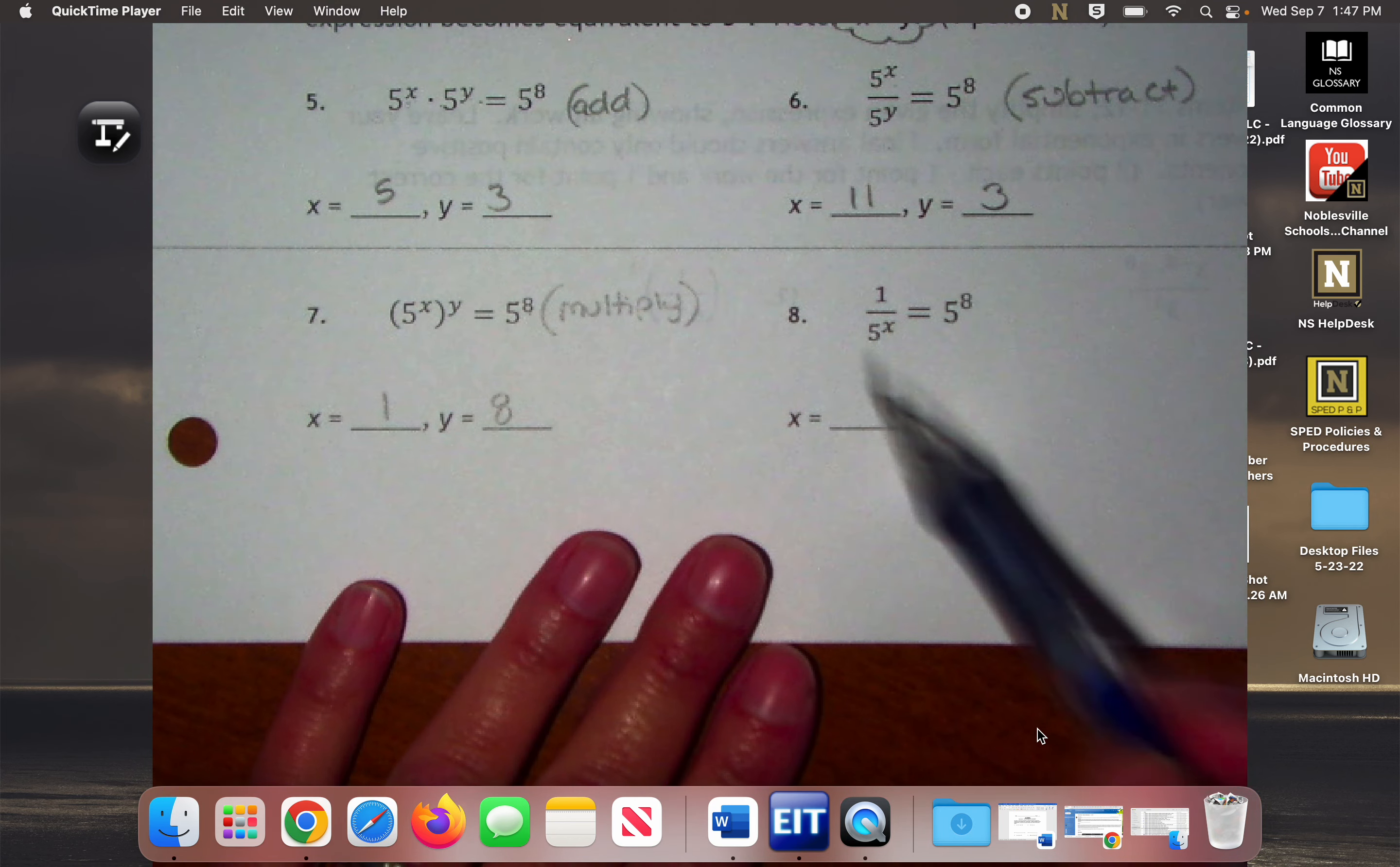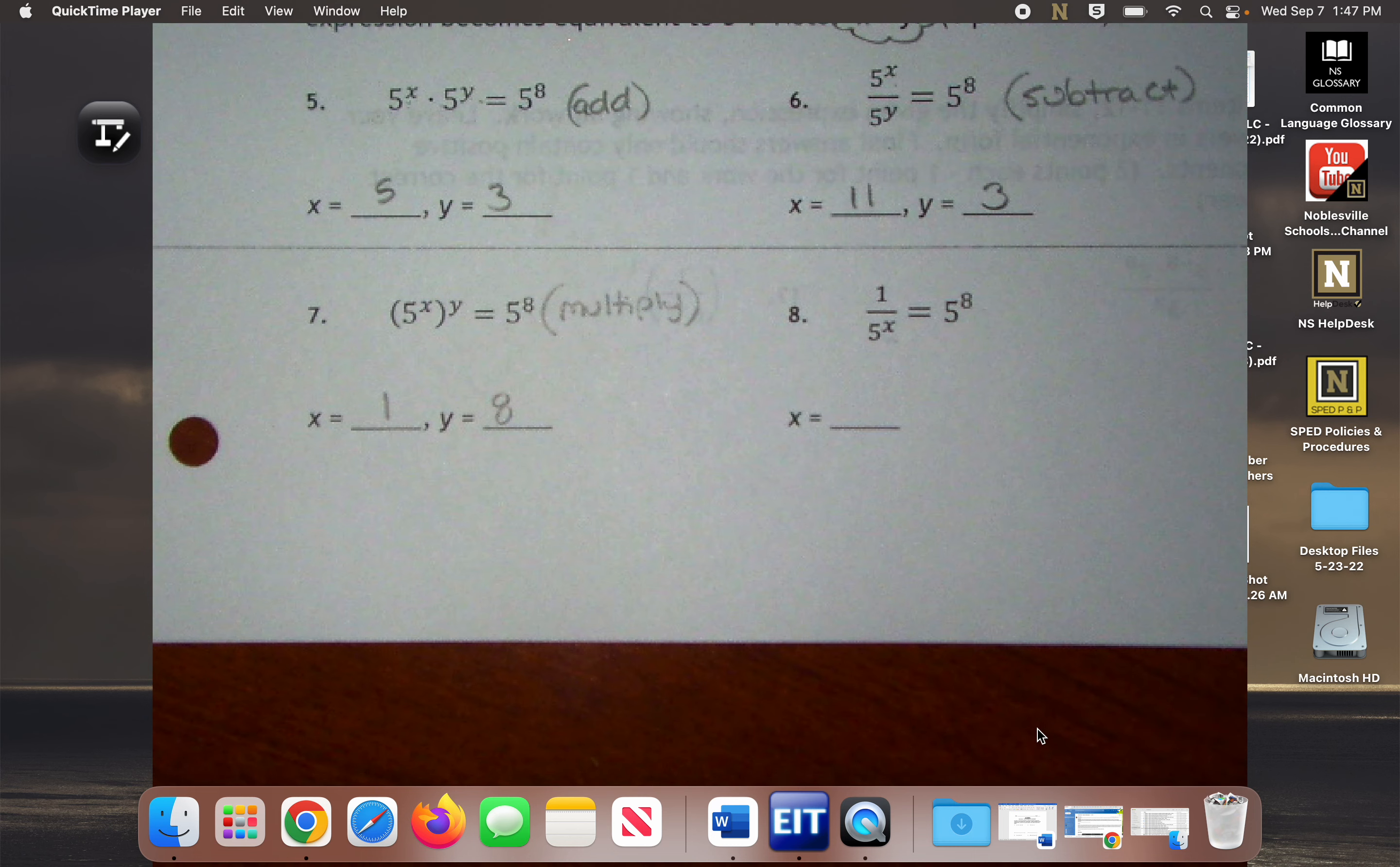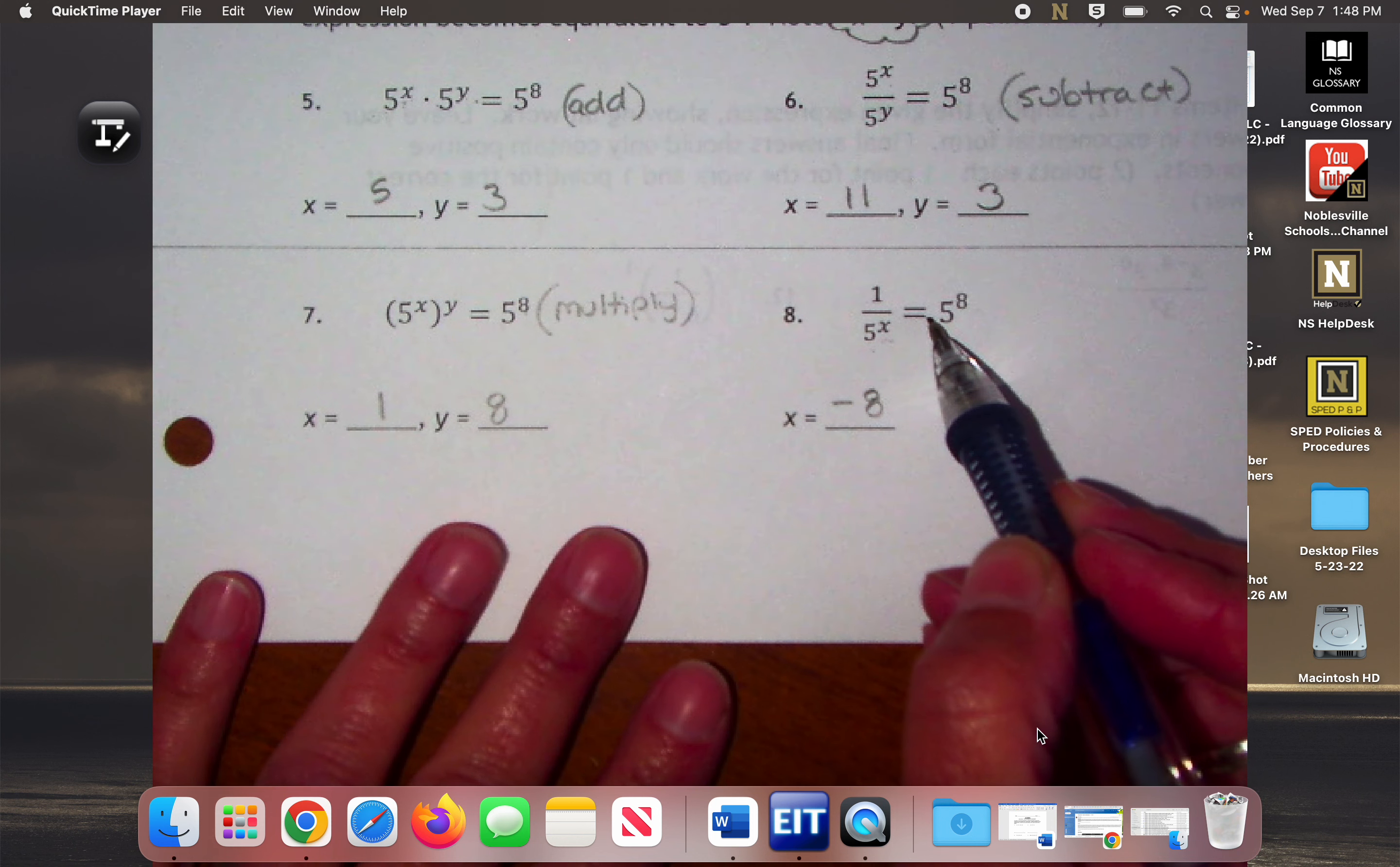I want everybody to go to the notes from yesterday in your jam, Tuesday, September 6th, and look at the negative rule notes and look at the last three questions. And tell me what does this X have to be to force it to be 5 to the 8th? If you look at the last three examples on the negative exponent notes. A negative 8. Excellent. It has to be negative 8 because then it would be forced to be 5 to the 8th power.